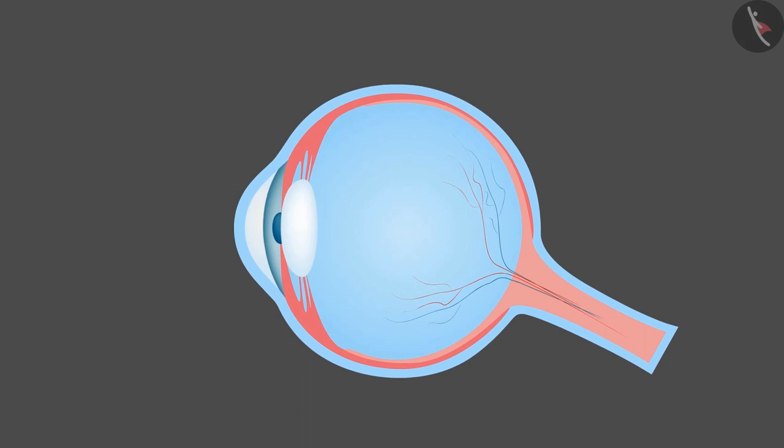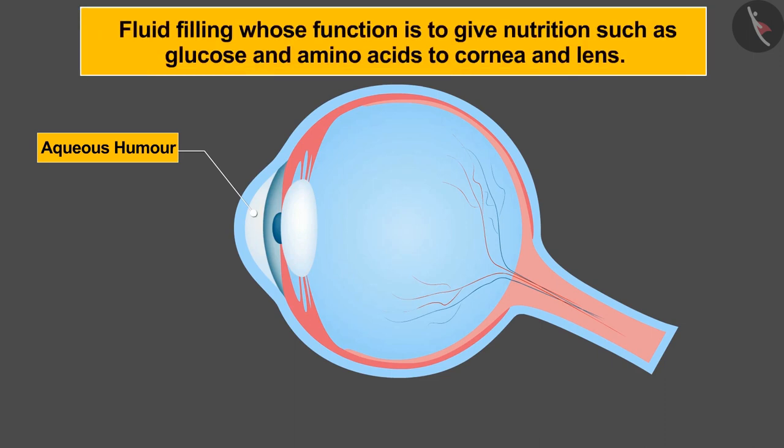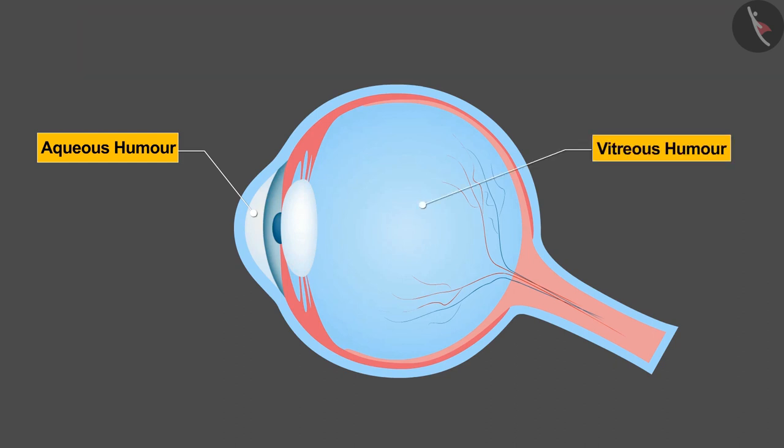Apart from these organs, there are two types of humor filling in our eyes. The first one is aqueous humor, which is a fluid whose function is to give nutrition such as glucose and amino acids to the cornea and lens.